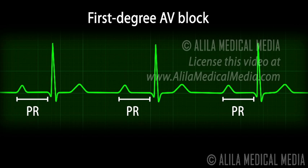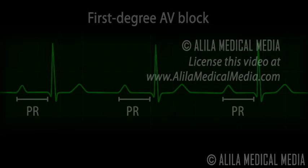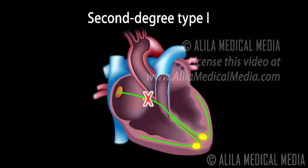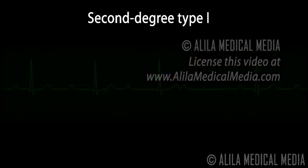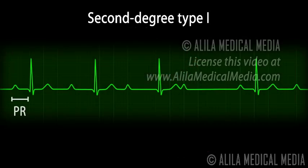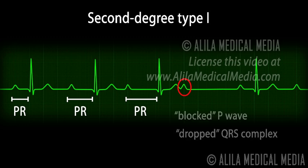First degree AV blocks rarely cause symptoms or problems and generally do not require treatment. Second degree AV blocks are divided further into type 1 and type 2. In type 1, the electrical signals are delayed further and further with each heartbeat until a beat is missing completely. On an ECG, this is seen as progressive prolongation of the PR interval followed by a P wave without a QRS complex.